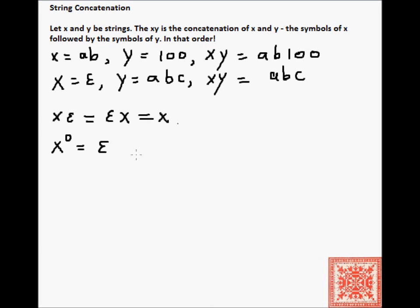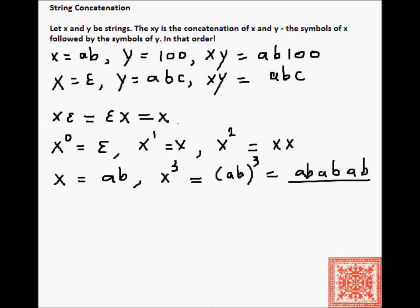The power notation is used with string concatenation to denote the concatenation of a string with itself. x to the 0 is epsilon, the 0 concatenations of x with itself. x to the 1 is the string x itself. x to the 2nd is x concatenated with x twice. In general, x to the n is n concatenations of x with itself. Here's an example. Let's say that x is ab, then x to the 3rd will be ab to the 3rd, three concatenations of ab with itself: ababab. No spaces in between. Just ababab.